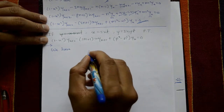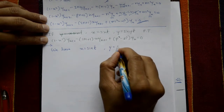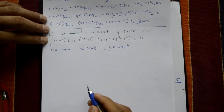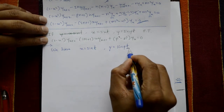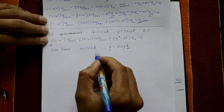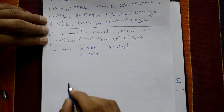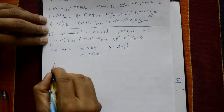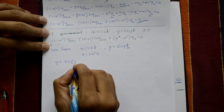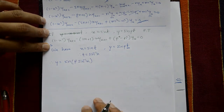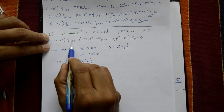We require only one y function. Since x = sin t, we have t = sin⁻¹ x. Substituting, y = sin(p · sin⁻¹ x). So we now have y as a function of x only.